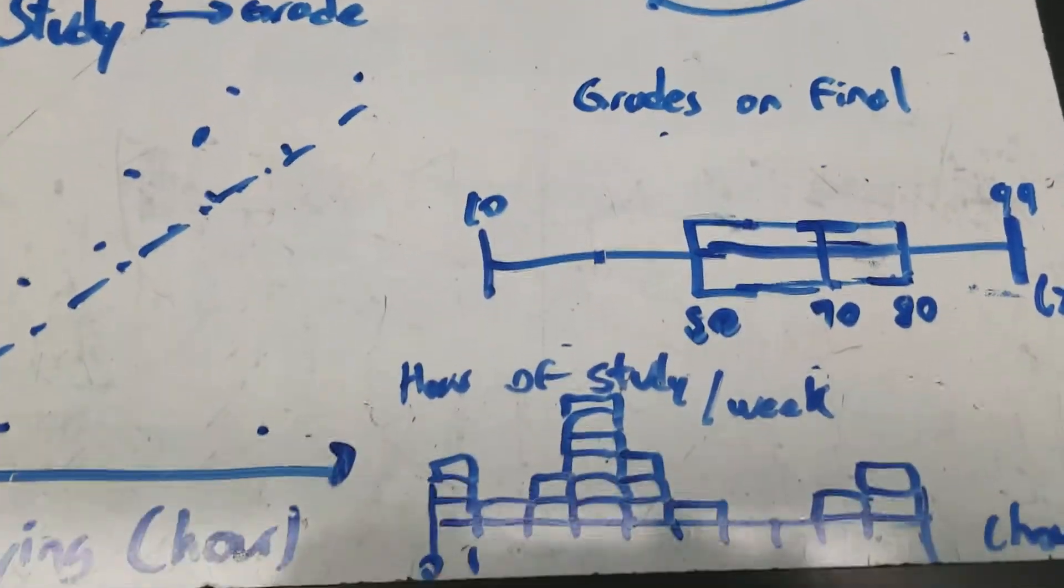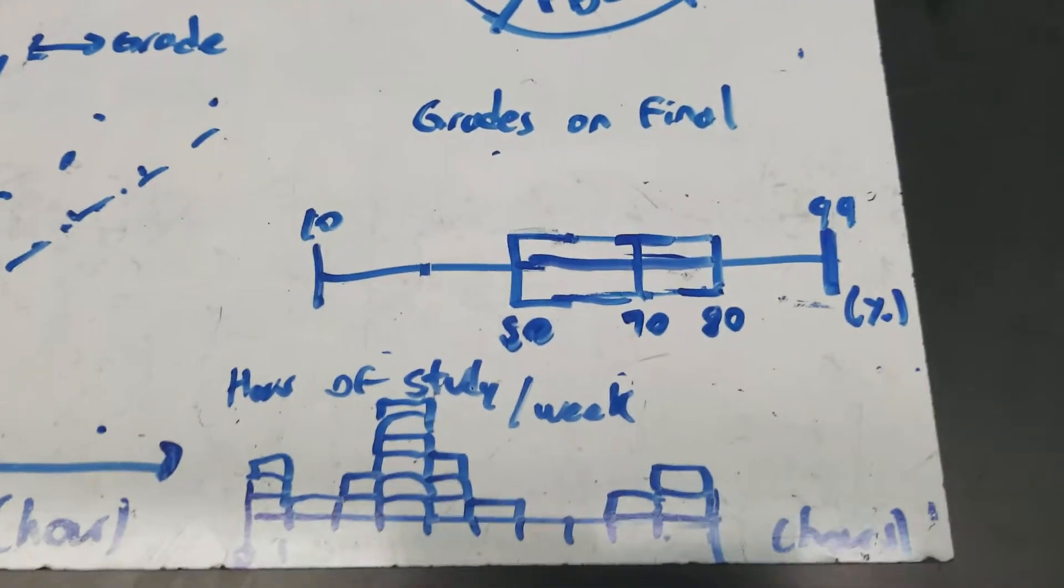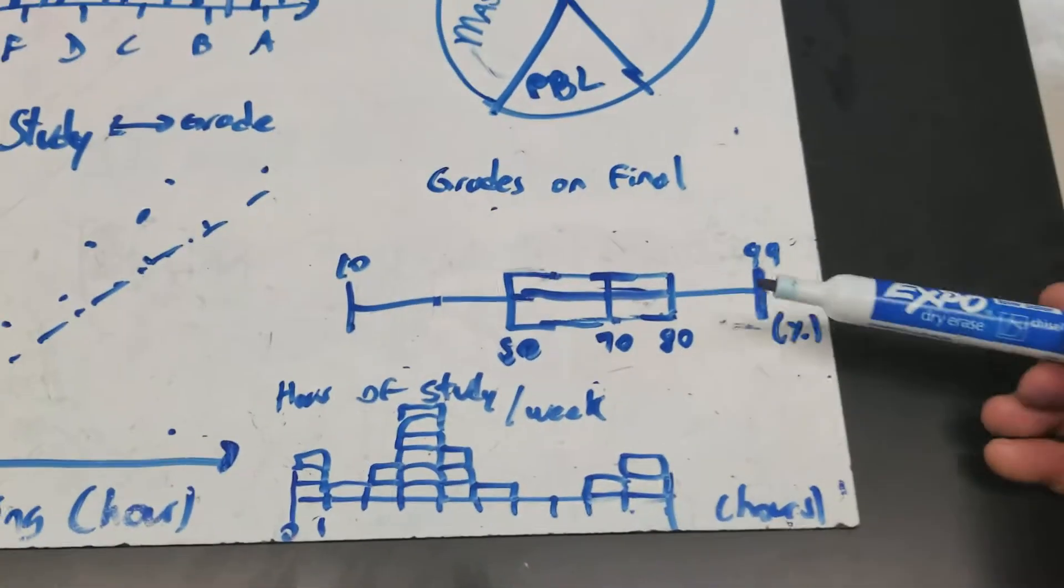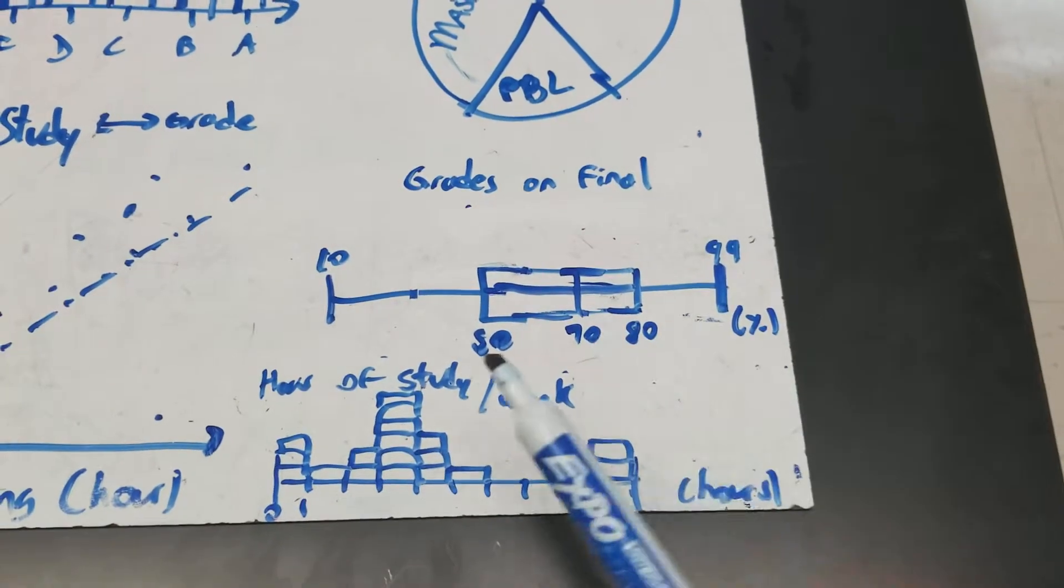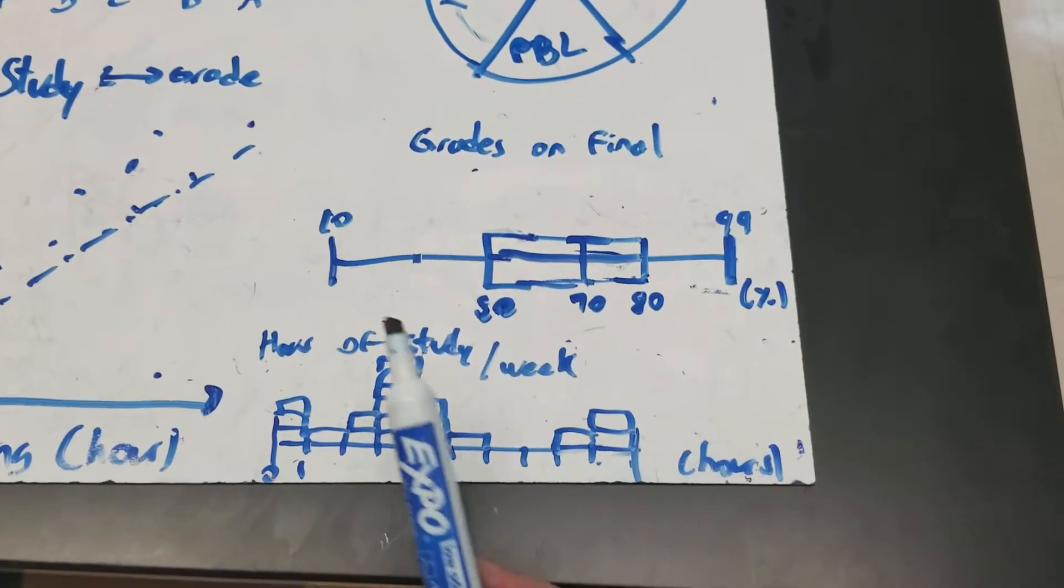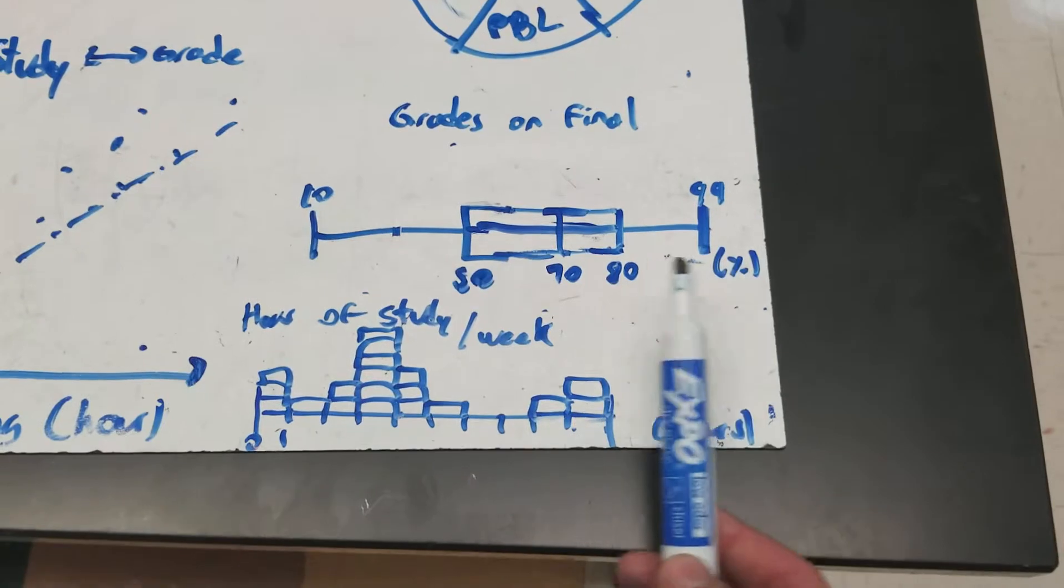Another important type of graph that we also use is histograms and box plots. And these are going to be used to show the statistical distribution of data. So, for example, this is grades on a final exam. And you can see that the lowest grade was a 10 and the highest grade was a 99.